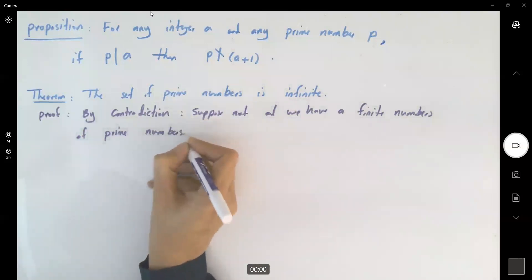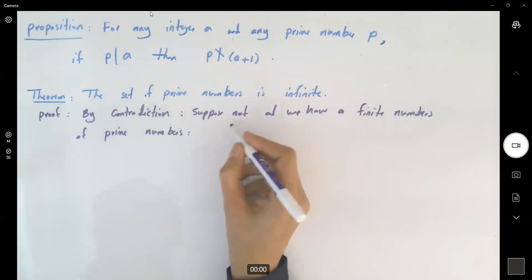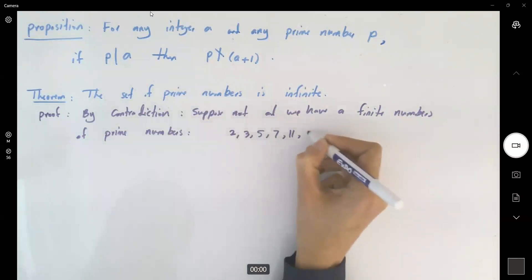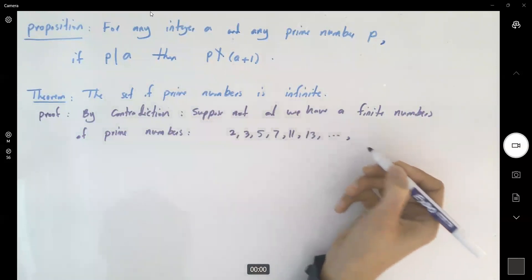Like what? Like 2, 3, 5, 7, 11, 13, and it stops at a prime number like p. This is the largest prime number that you have.